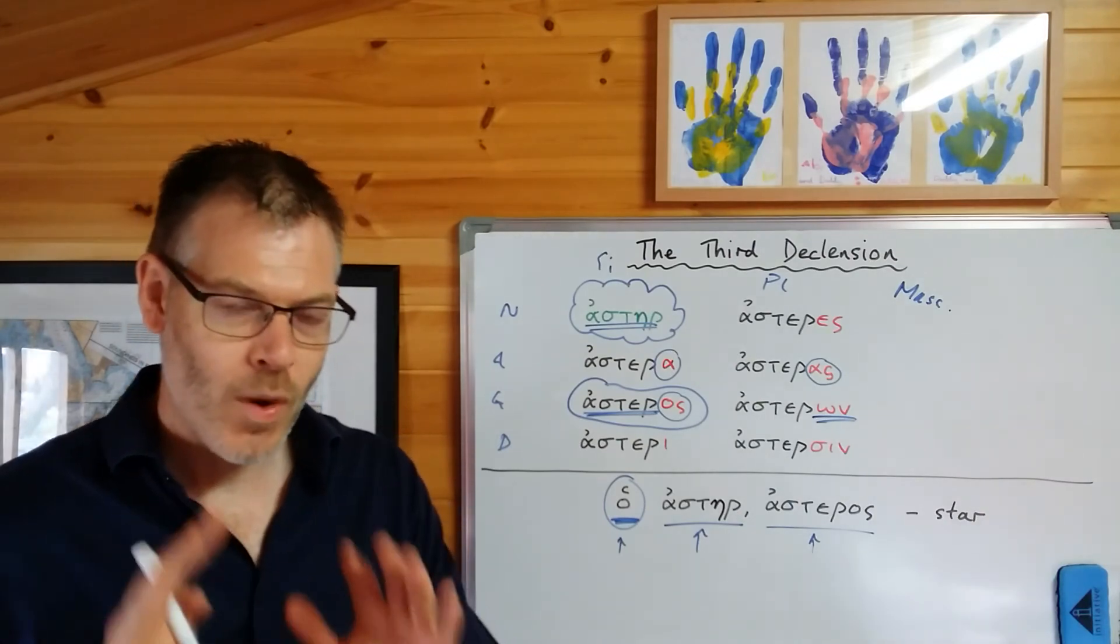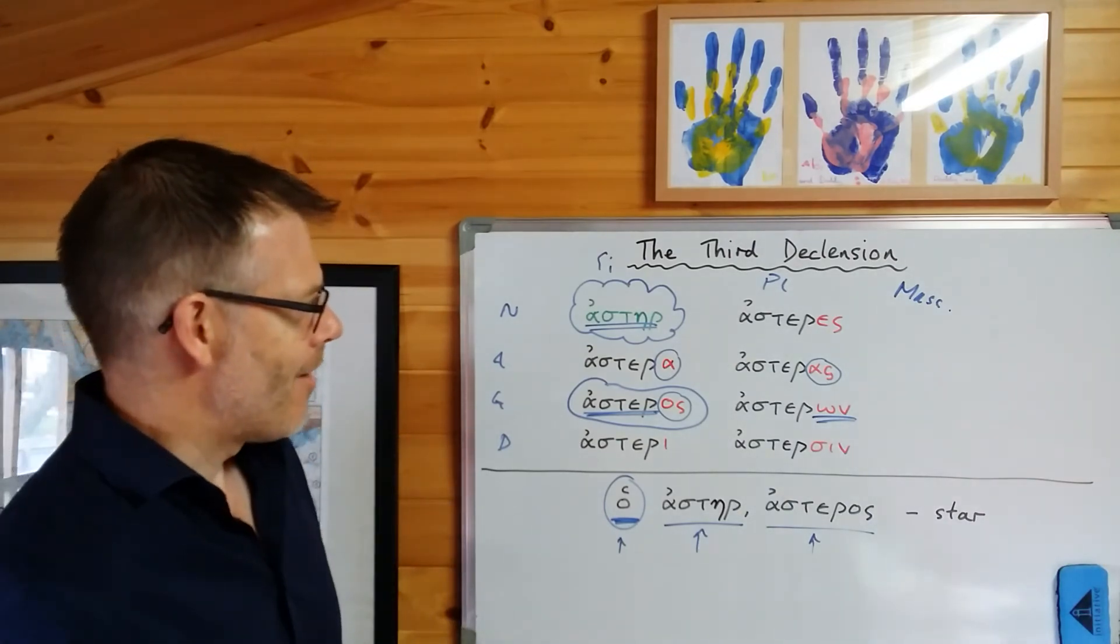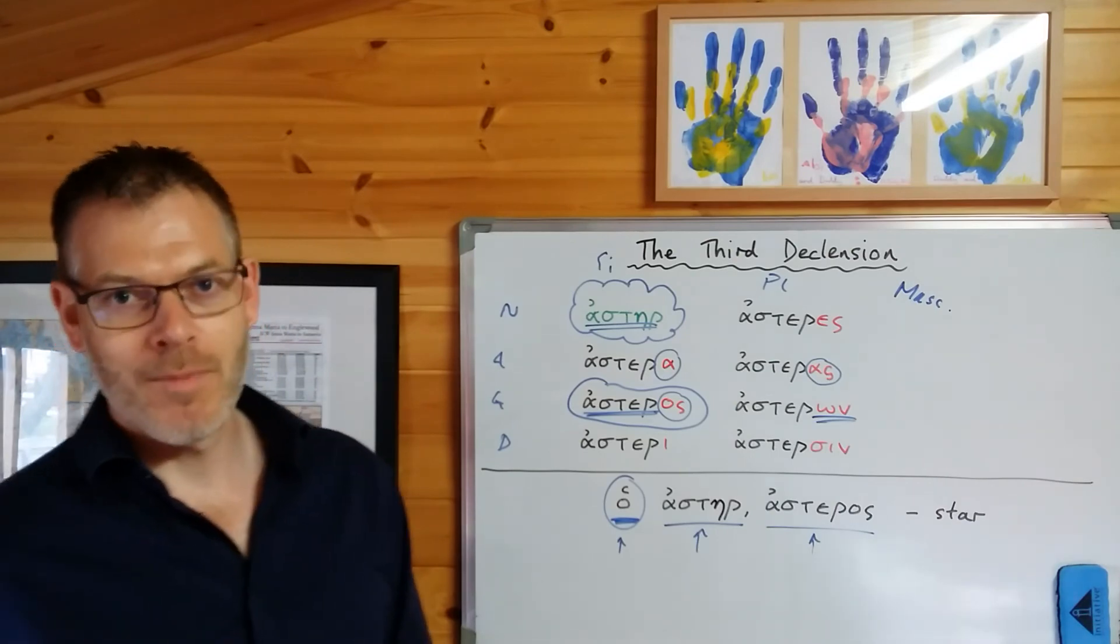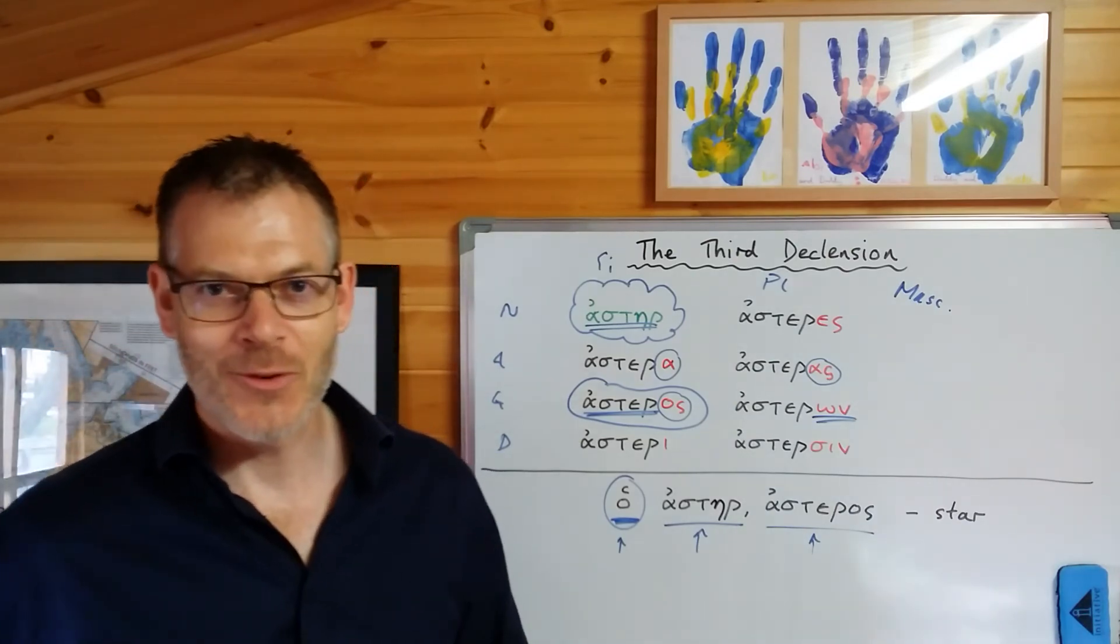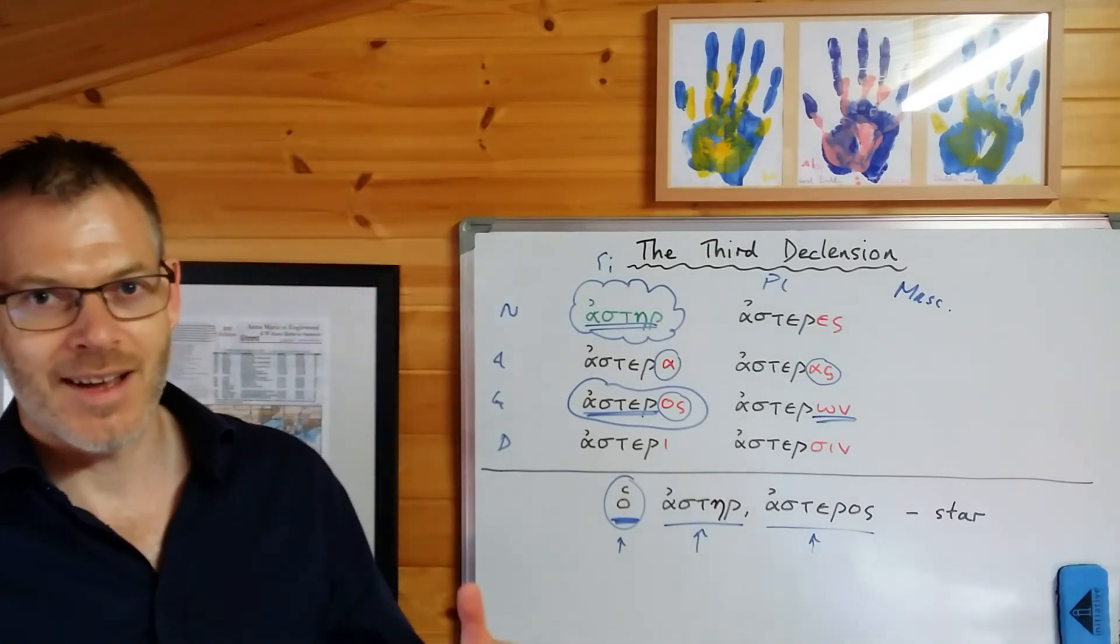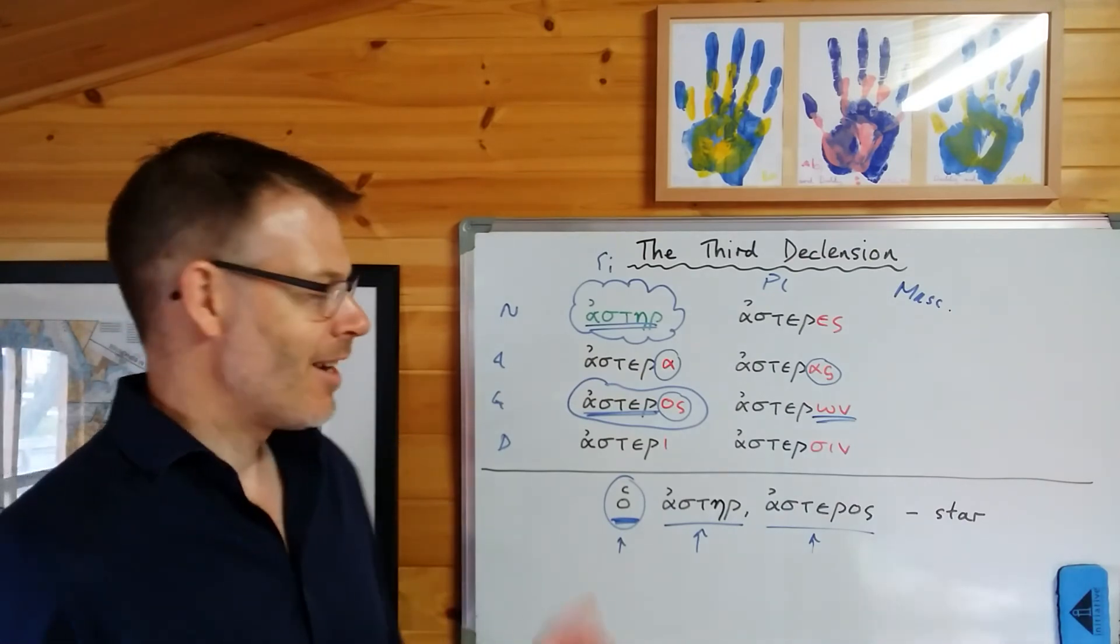Now, when you're learning these nouns, and I can't encourage you strongly enough, don't just march around your neighbourhood, or sit in your study, or wherever it is chanting, aster, star, aster, star. Please, please, please, learn it like this...